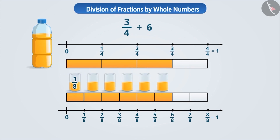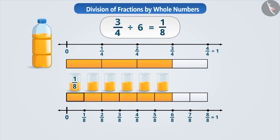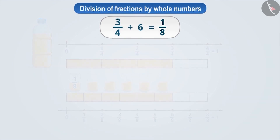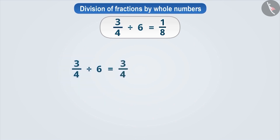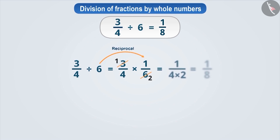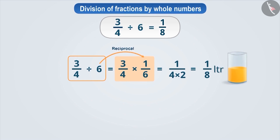So each child gets one-eighth of a litre of juice. Therefore, three by four divided by six is one by eighth. To solve three by four divided by six in mathematics, we first write the number three by four as it is, then multiply it by the reciprocal of six, that is one by six. The result we get is one by eighth. So each child will get one-eighth litre of juice.